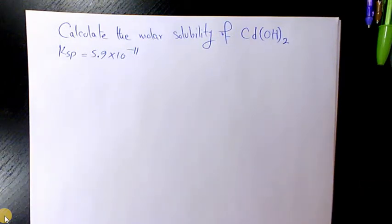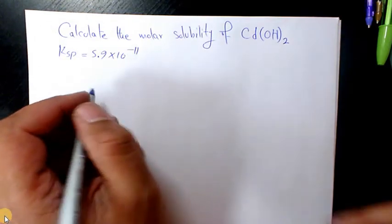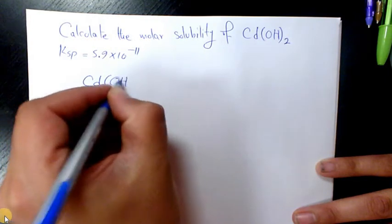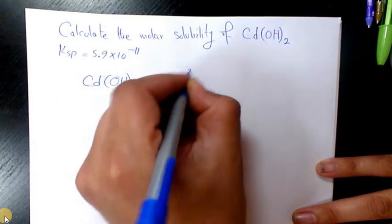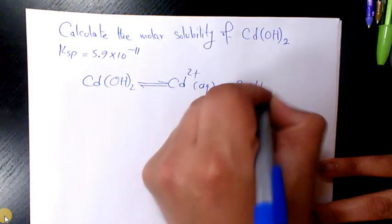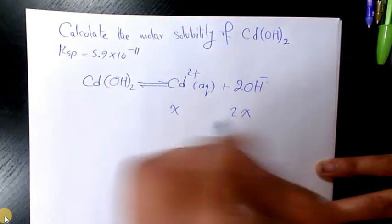What's up guys, this is Massey. Welcome to another video. In this video I want to show you how to calculate the molar solubility of cadmium hydroxide. The KSP is 5.9 times 10 to the power of negative 11. Cadmium hydroxide is the solid. It dissolves and produces cadmium ion and 2 hydroxide ion.